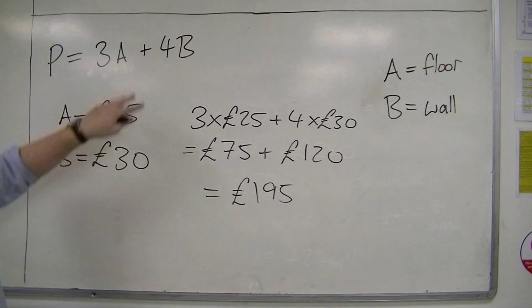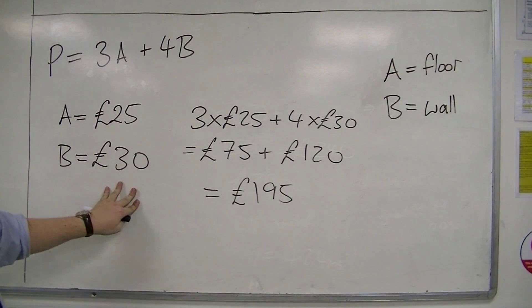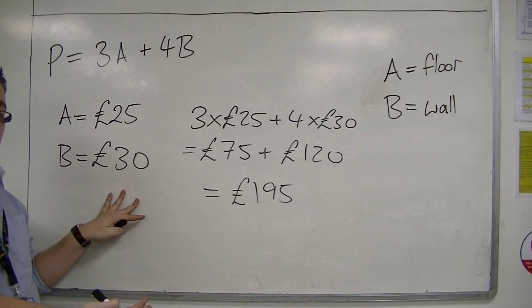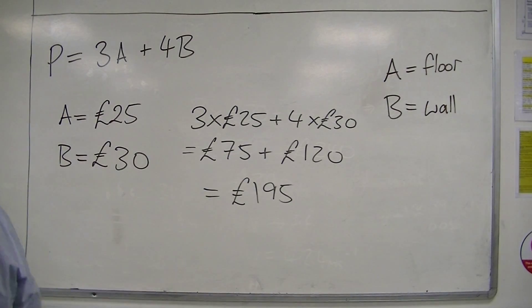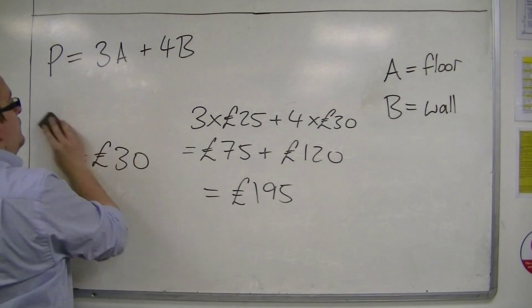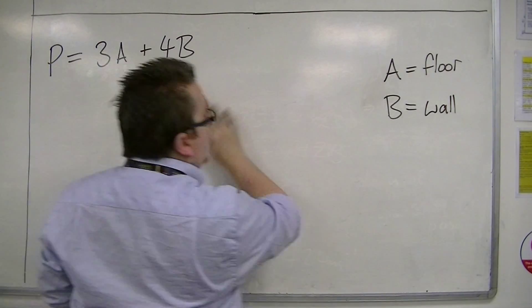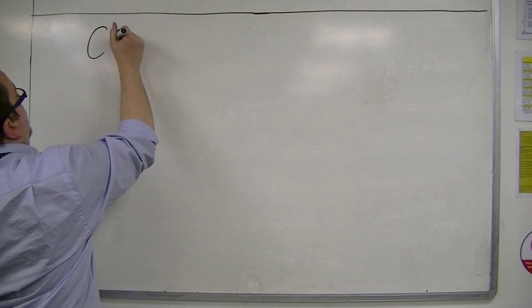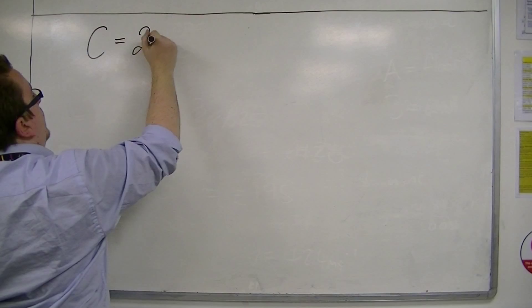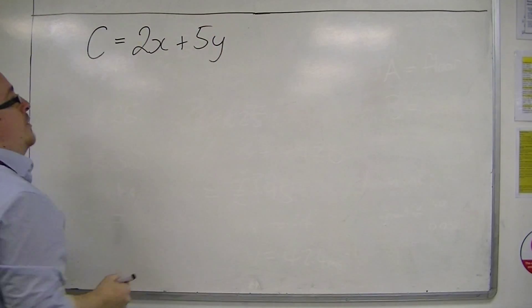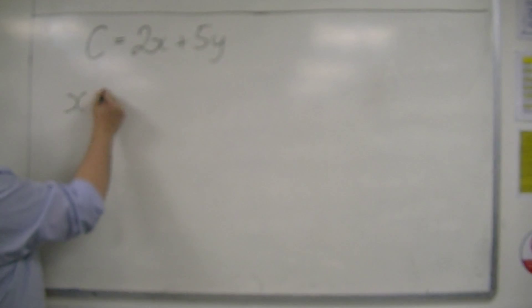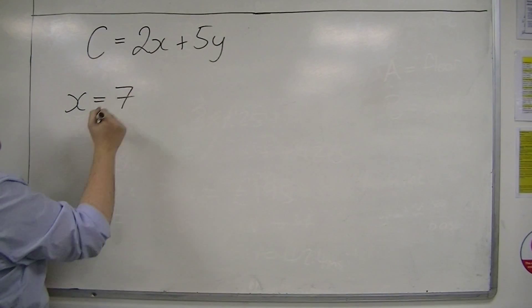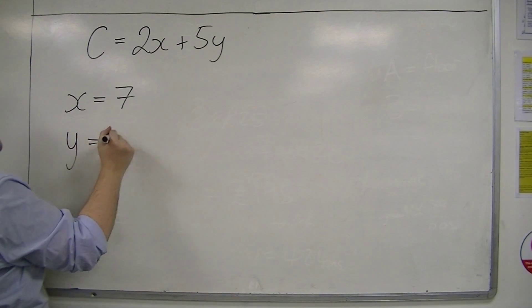It's exactly the same formula — it's just the numbers that I'm putting into the formula that have changed. So instead of A's and B's, we could change this formula to be: cost equals 2x plus 5y, for example. So this is a formula. And let's say x is 7, and y is 2.